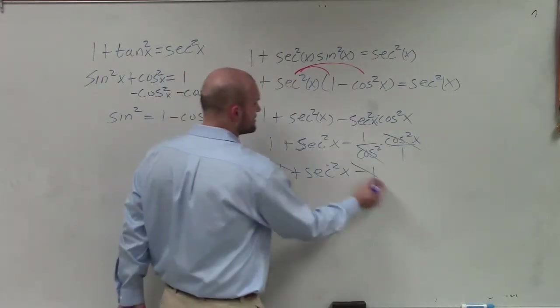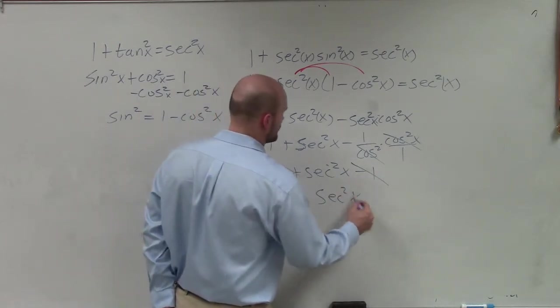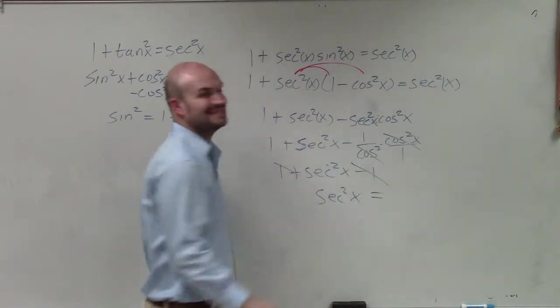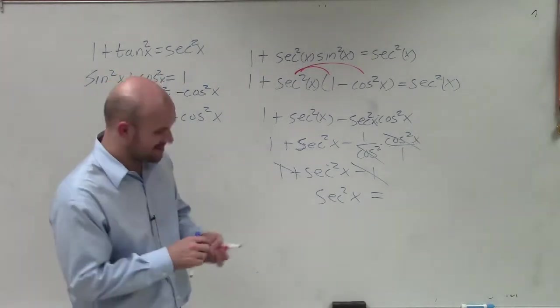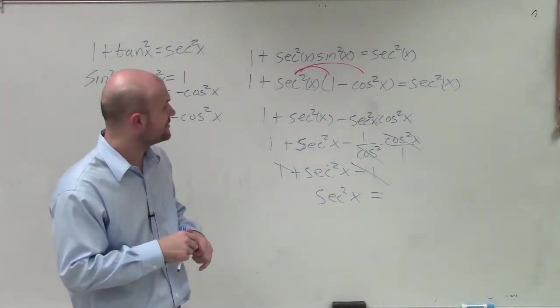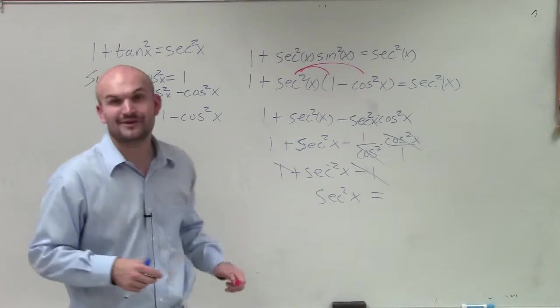Well, now my 1's, those add up to 0. And I'm just left with secant squared of x equals secant squared of x. So there you go, ladies and gentlemen. That is how you verify your identity by using your Pythagorean identities. Thanks.